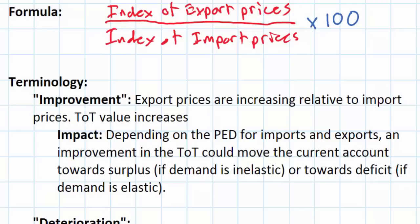The country's net exports will increase and the current account will move towards surplus only if the higher price of the country's exports does not strongly deter foreign consumers from buying those goods. If foreign demand for a country's goods is inelastic, higher prices will not deter foreign consumption and the amount foreigners spend on the country's exports will actually increase. At the same time, if demand for imports is relatively inelastic, domestic consumers will not drastically increase their quantity demanded as import prices fall, so they will spend less on imports — leading to an improvement in the current account balance, moving it towards surplus.